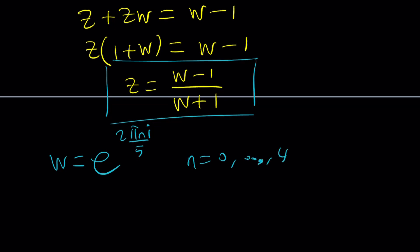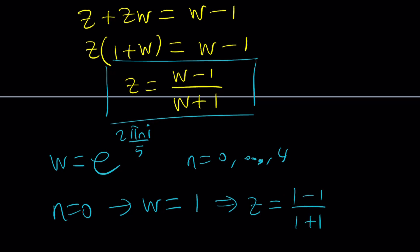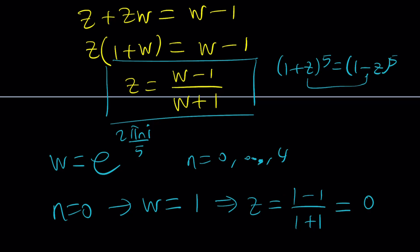If we replace n with 0, w equals e to the power 0, which is 1. From here z equals 1 minus 1 over 1 plus 1, which is 0. Does that mean 0 is a solution? Yes — if z is 0 you get 1 equals 1, so it works. We'll look at it from another perspective later.